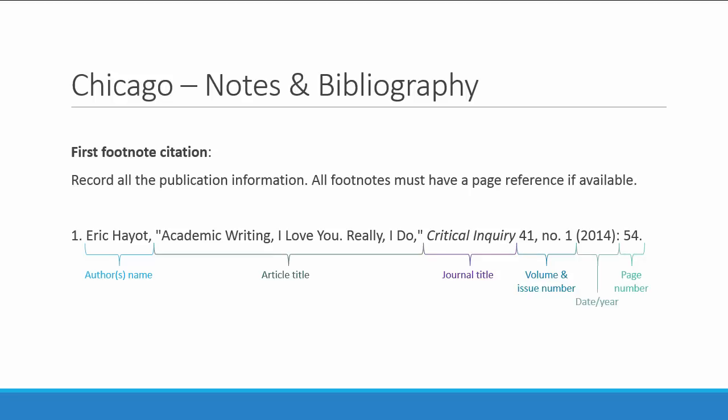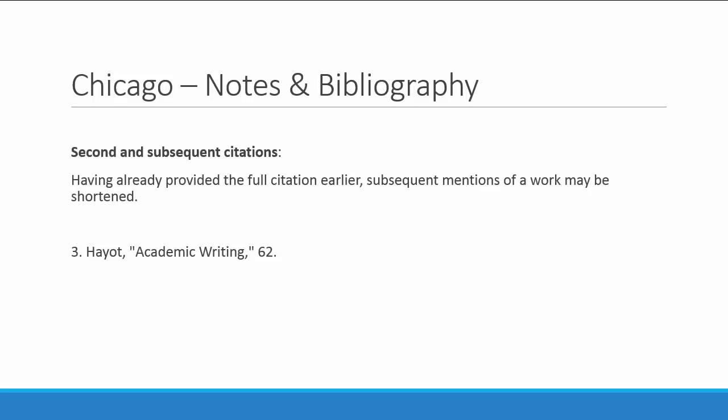When that resource is used thereafter, a short version of the citation may be used. This version merely needs to briefly indicate to the reader which source is being referred to, so note only the author's surname is used, as well as a short form of the title using at most three to four words, and the page number.